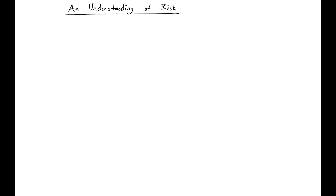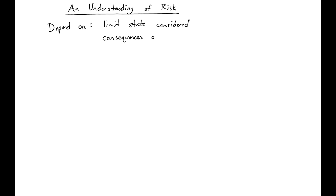Now we're going to discuss an understanding of risk which is important for us as structural engineers. First, the amount of risk that we're willing to take on will depend on our limit state that we're considering, and it will also depend on the consequences of failure. If there's a higher consequence to failure — so the potential of more deaths — then we want to take on less risk.